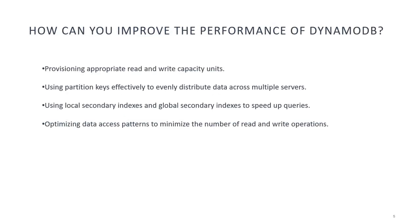How can you improve the performance of DynamoDB? There are several ways to improve DynamoDB performance, including: provisioning appropriate read and write capacity units; using partition keys effectively to evenly distribute data across multiple servers; using local secondary indexes and global secondary indexes to speed up queries; and optimizing data access patterns to minimize the number of reads and writes.